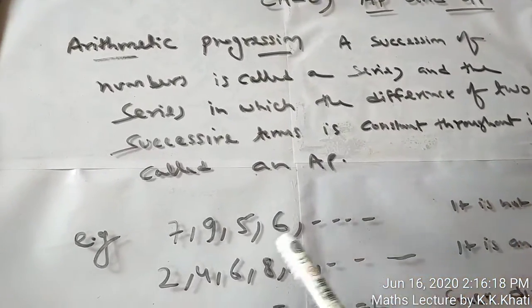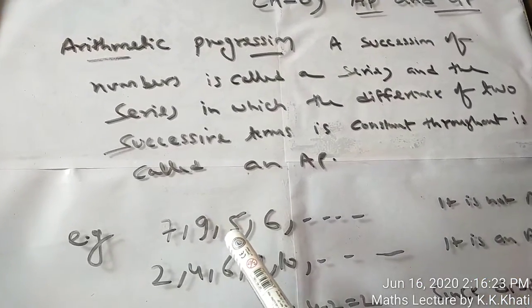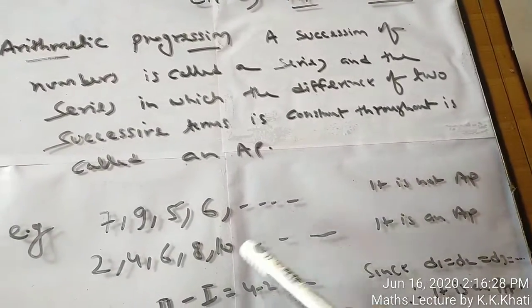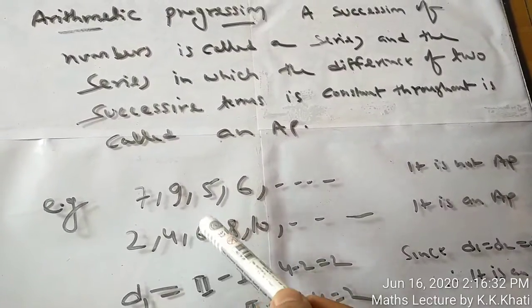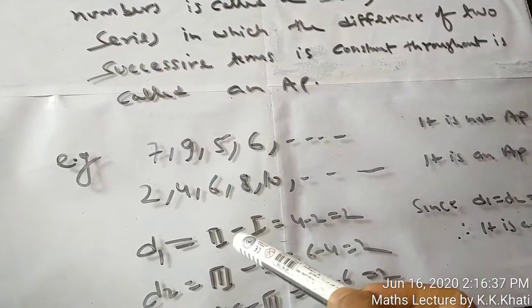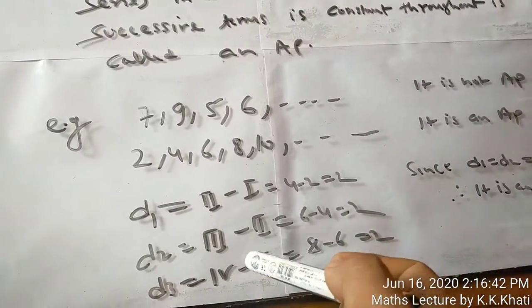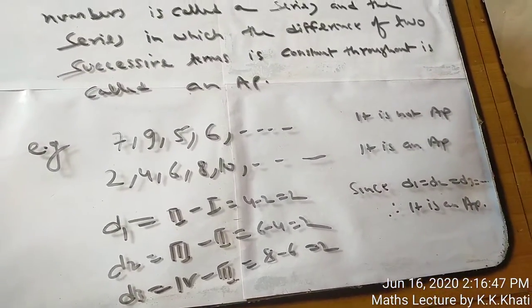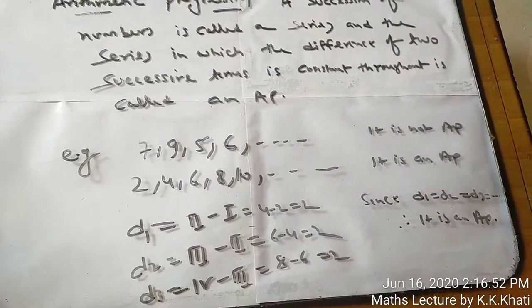For example: 7 plus 2 is 9, 9 plus 2 is 11, and so on. Again, 2 plus 2 is 4, 4 plus 2 is 6, 6 plus 2 is 8, 8 plus 2 is 10. Check the difference: second term minus first term is 2, third term minus second term is 2, fourth term minus third term is 2. This way we check the differences. If common difference is equal, that series is called an AP.